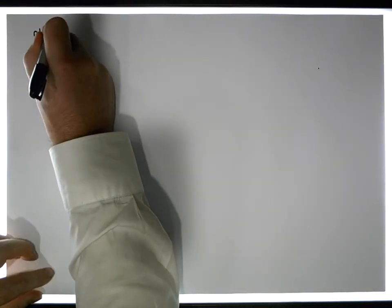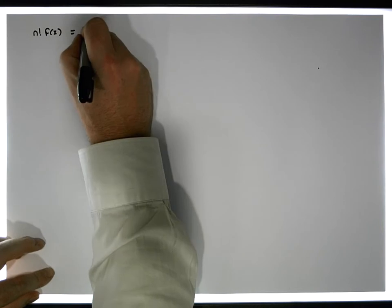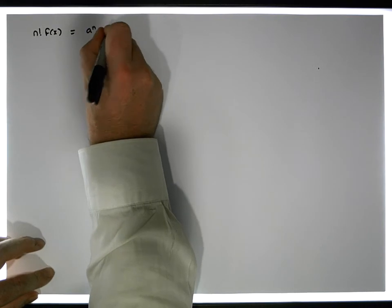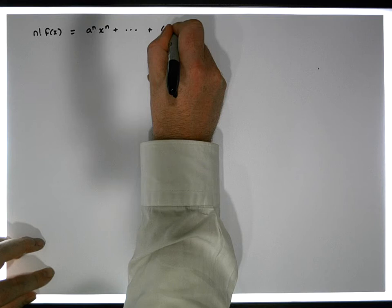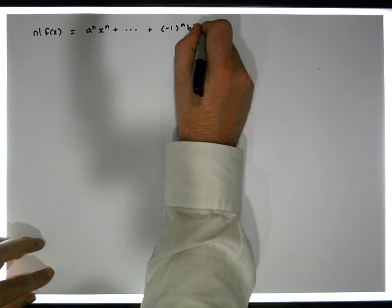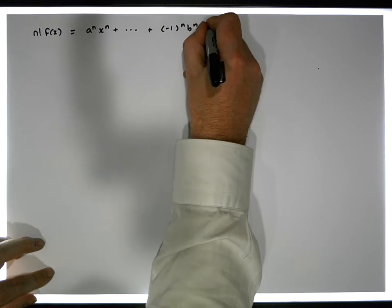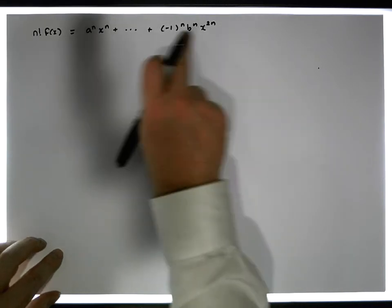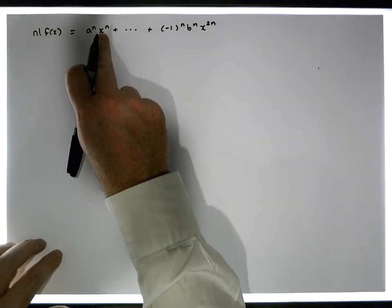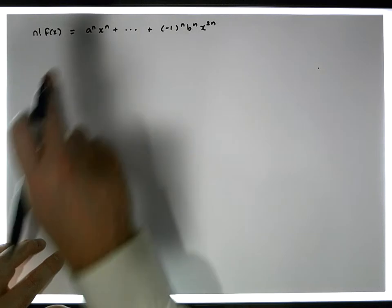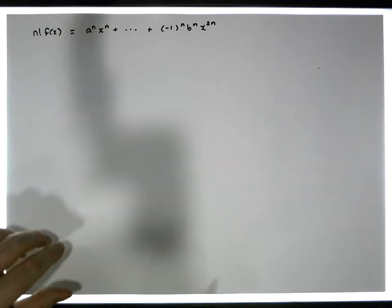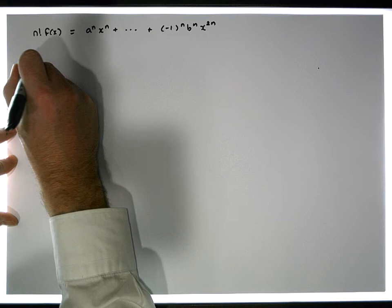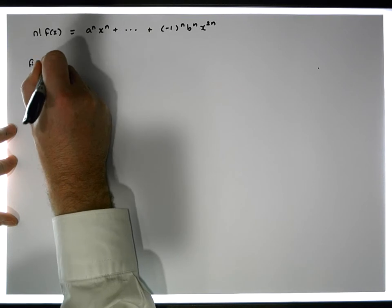So let me write it down again: n factorial times f(x) equals a to the n times x to the n, plus all the way down to minus one to the n times b to the n times x to the power of 2n. The important thing to note here is that every single term has the indeterminate x present — that's really important.